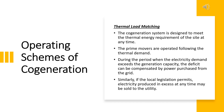The last scheme is thermal load matching. The co-generation system is designed to meet the thermal energy requirement of the site at any time. The prime mover is driven by thermal demand. During periods when electricity demand exceeds generation, the deficit can be compensated by power purchase from the grid. Similarly, if local legislation permits, electricity produced in excess may be sold to the utility.